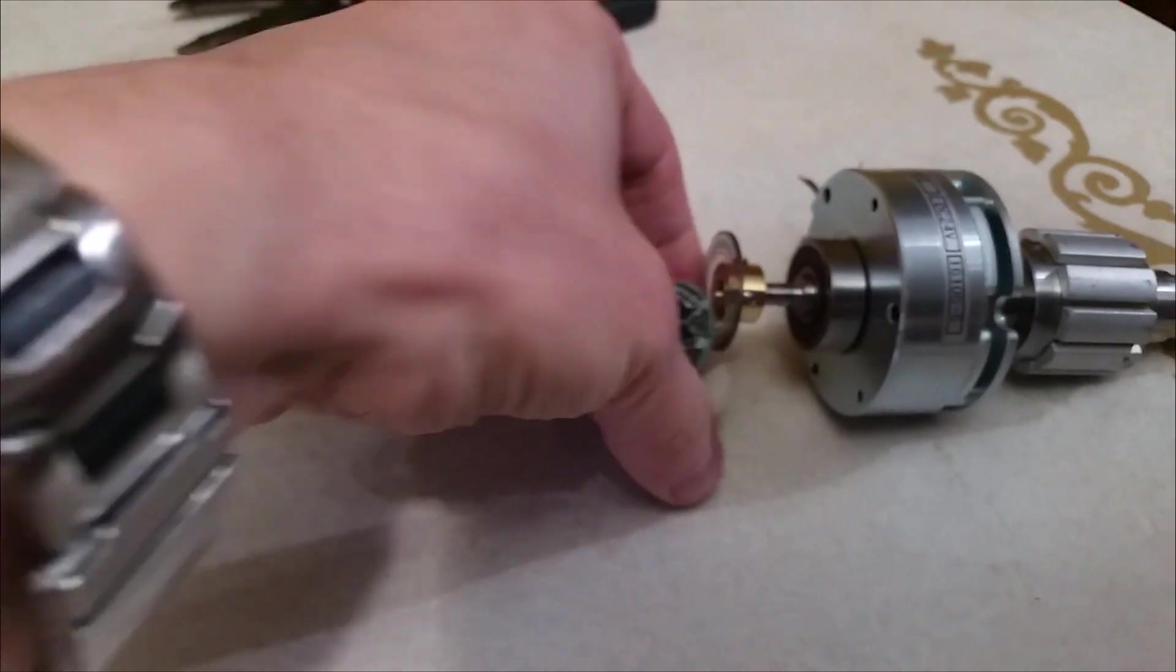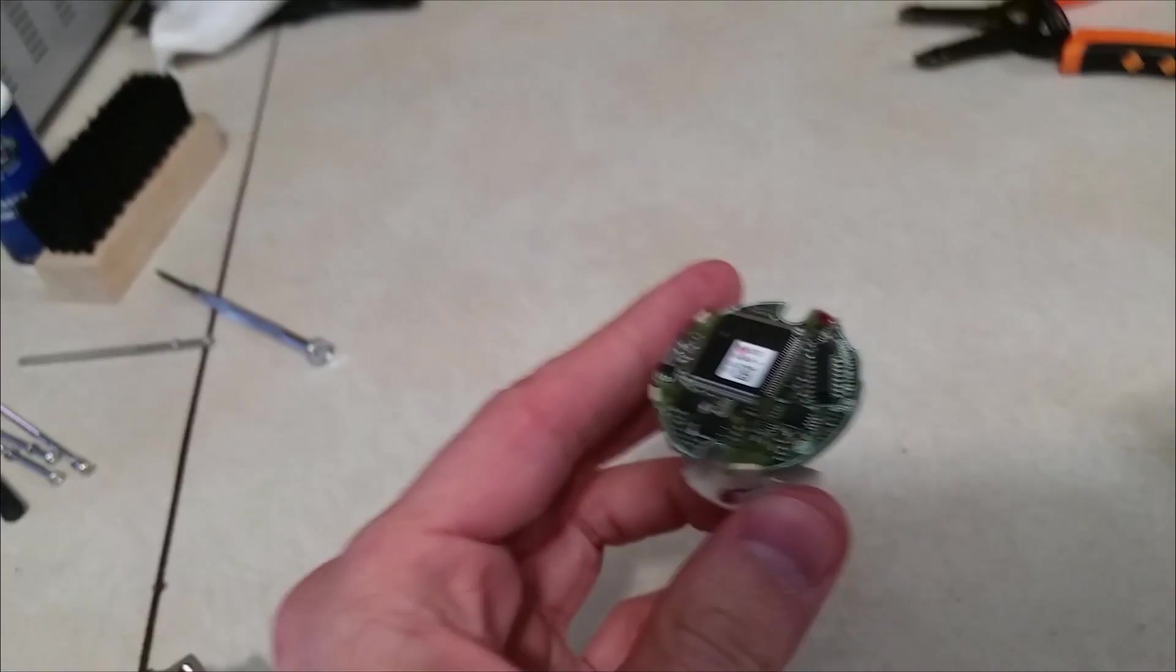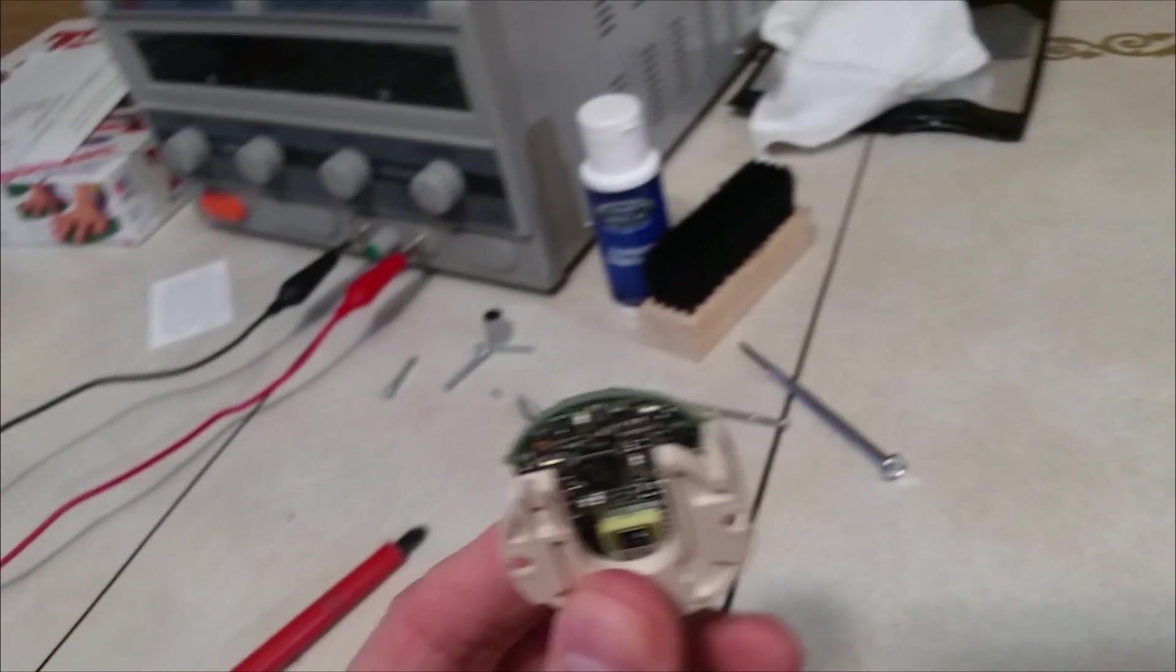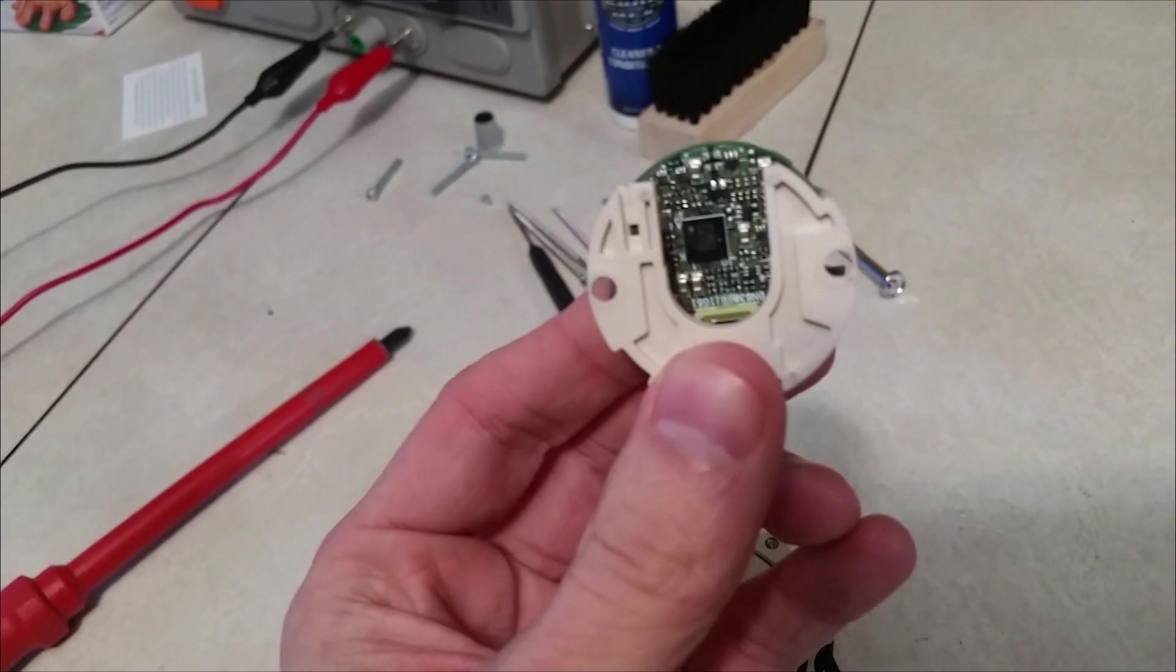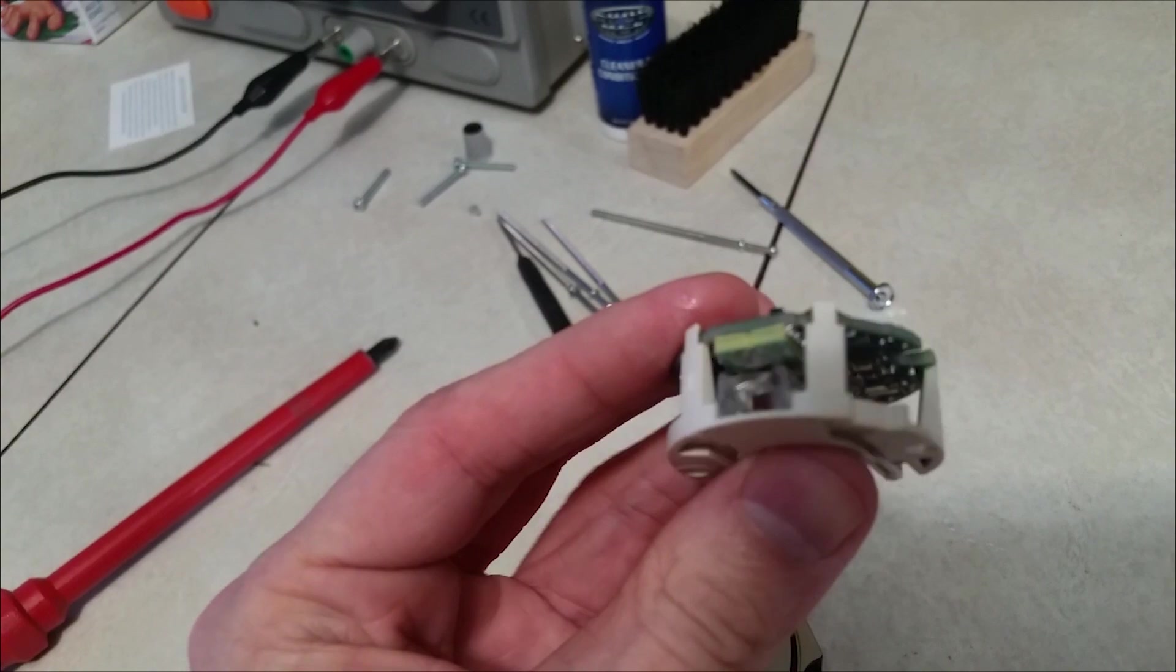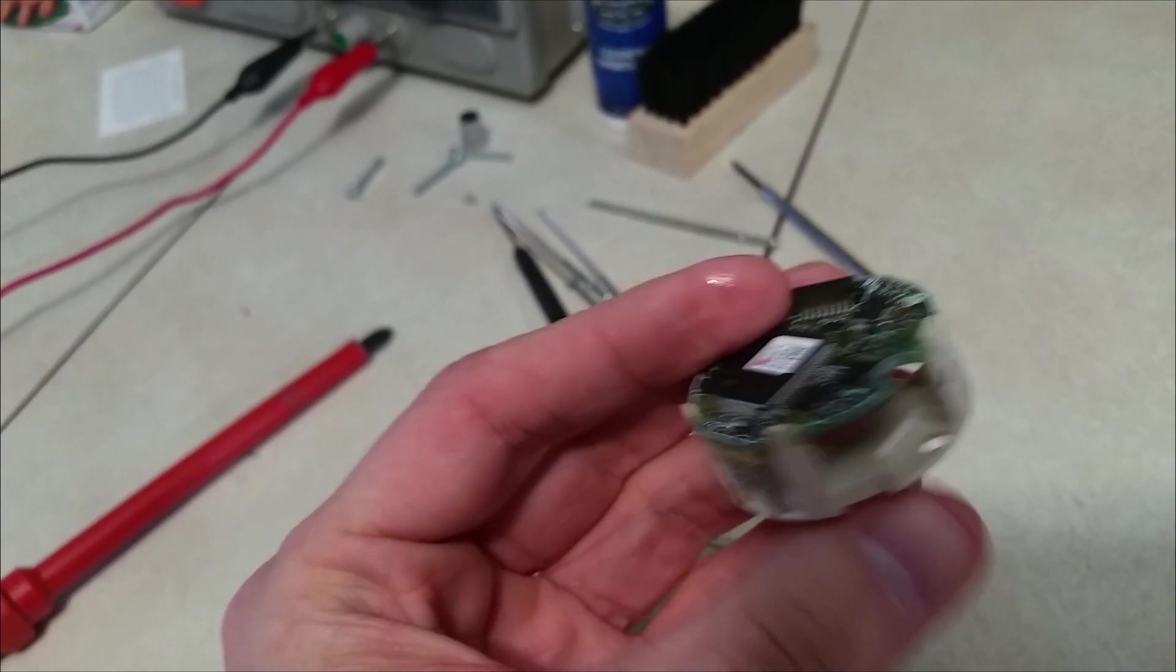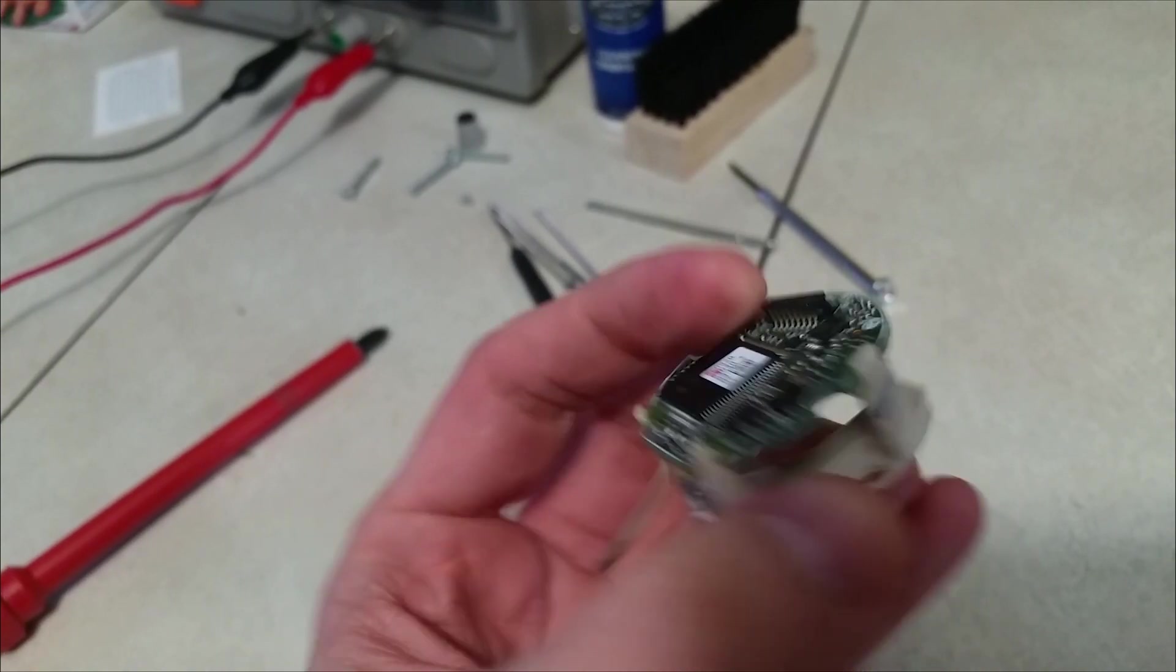So here is the electronic component of the encoder. And what actually happens is it shines a light. There it is. There you can see it. It shines a light that bounces around back and forth. And that's pretty much all it does. But it also does some calculations with that.